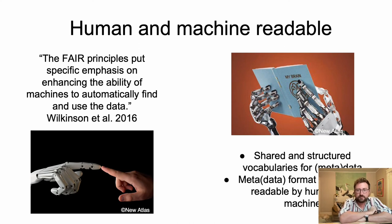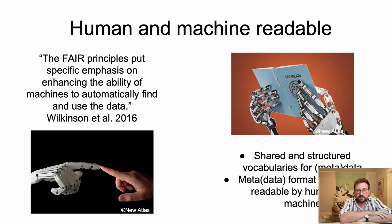Data and metadata need to be well described according to common standards, and importantly, they need to be readable both by humans and machines. For example, some formats like PDFs are not necessarily readable by machines. In many FAIR projects, JSON and XML are the most commonly used formats for text files, as they can be both read by humans and machines easily.